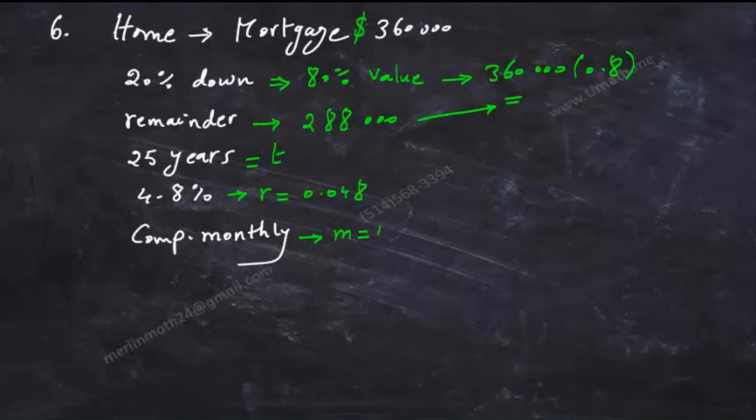Now i equals r over m, n equals mt, and we put all this in the present value annuity formula.